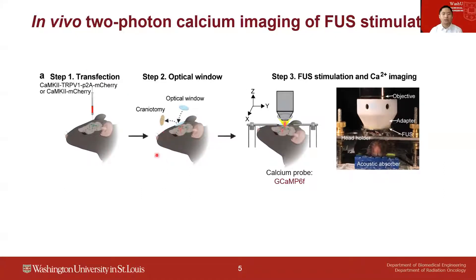In this way, the two-photon microscope can look through the optical window and image neural activities at the cellular level. Focused ultrasound stimulation was then performed using a customized setup. A ring-shaped transducer was coupled to the objective of the two-photon microscope, and the calcium indicator GCaMP6F was used to indicate whether the neurons are activated or not.